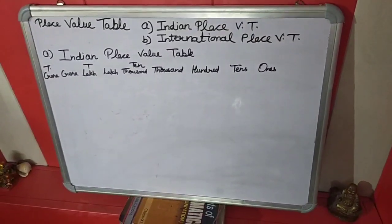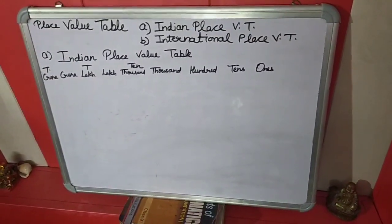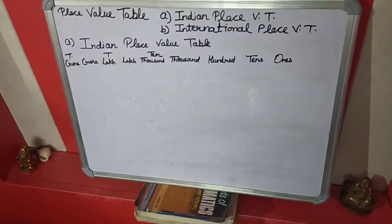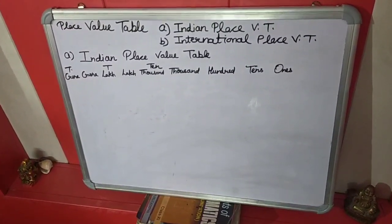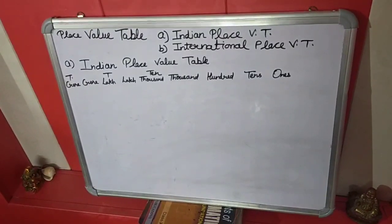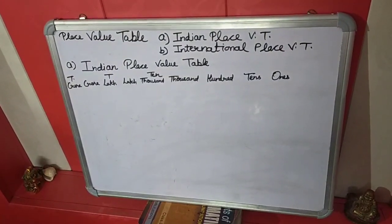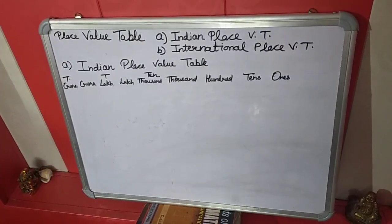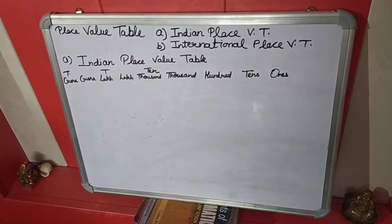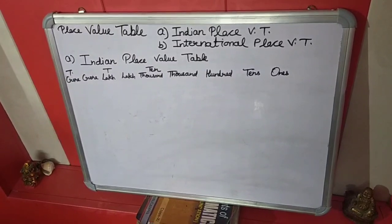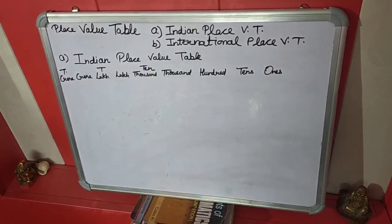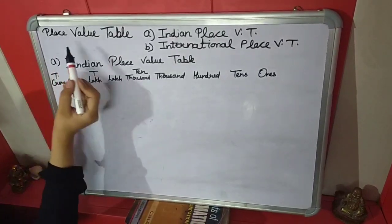Hello students, today we are going to start the first chapter of mathematics: Knowing Our Numbers. Let's start with the introduction. We enjoyed working with numbers in our previous classes — we have added, subtracted, multiplied, and divided them. In this chapter we shall move forward with such interesting things, with a bit of review and revision as well. We will start with the place value table.